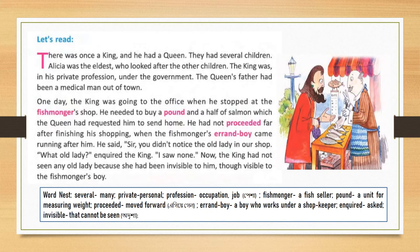The errand boy said, 'Sir, you did not notice the old lady in our shop.' The king replied, 'What old lady? I saw nobody.' The king had not seen any old lady because she had been invisible to him, though visible to the fishmonger's boy.